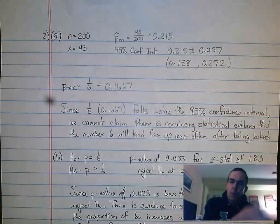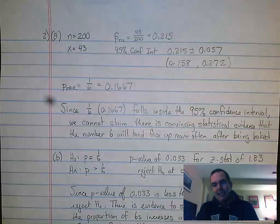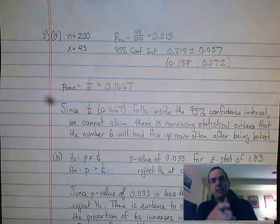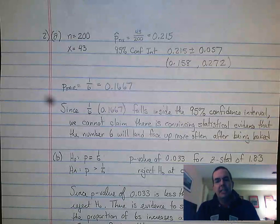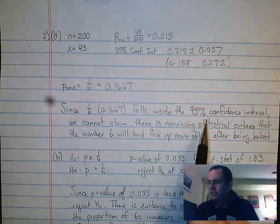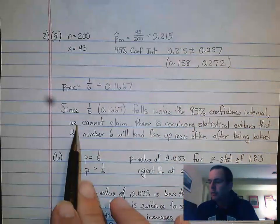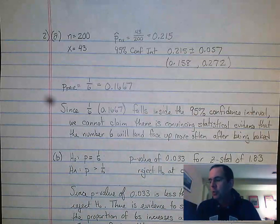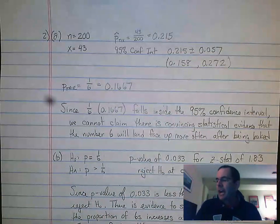If it was outside the interval, it would give me evidence. Since it's in the interval, it doesn't give me evidence. We can't say that the die changed because my confidence interval actually captures a fair die as well. Since one-sixth falls inside the 95% confidence interval, we cannot claim there's convincing statistical evidence that the number six will land face up more often after being baked.